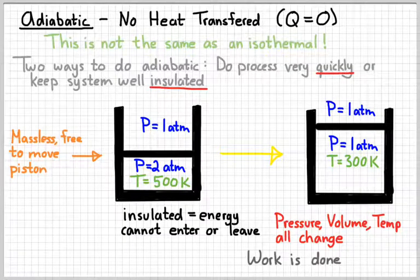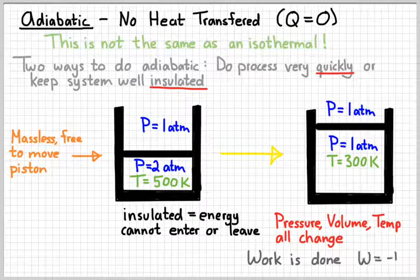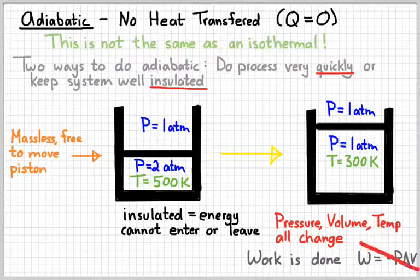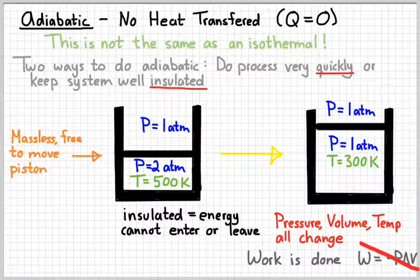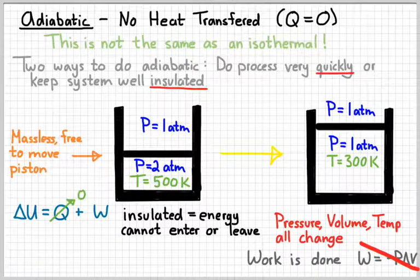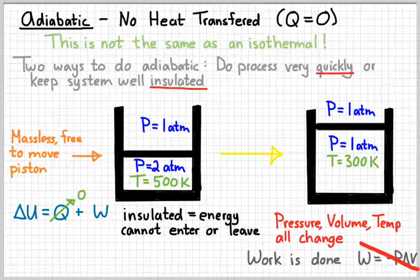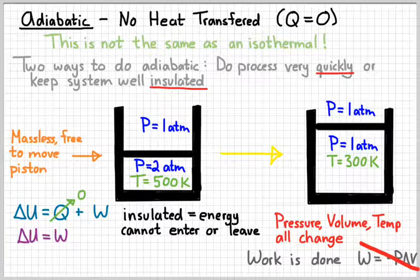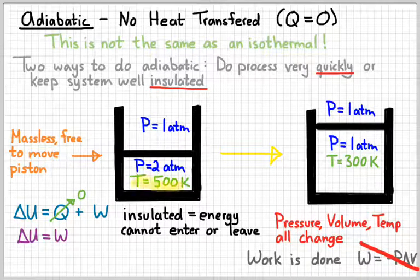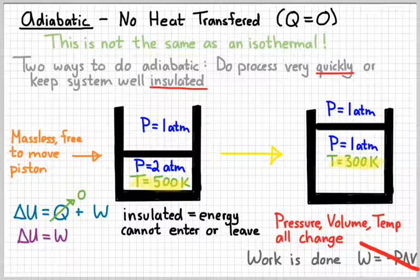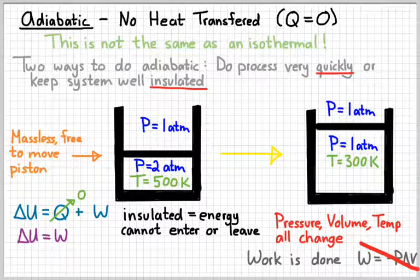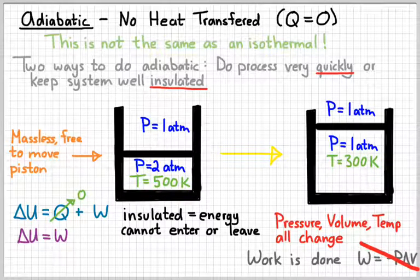There is work being done because the piston expands, goes up. And again, because pressure is not constant, we can't use the P delta V equation. In the first law equation, now Q is zero. So delta U would simply equal W. So in this situation that I drew, because the work done is negative, the gas expanded and lost energy, the gas cools down. Delta U decreases, hence we see the temperature go from around 500 Kelvin to around 300 Kelvin. Because negative work was done, gas expanding, that means internal energy had to be lost.